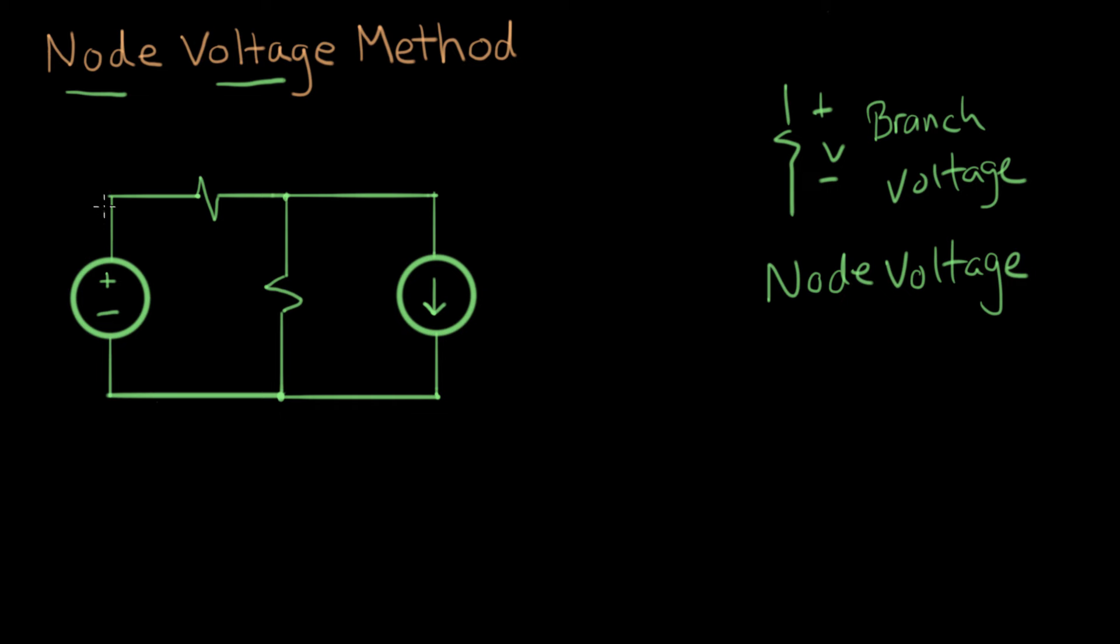We'll call this node here, where this junction between this resistor and this source, we'll call this node one. This is the junction between these two components here. There's another node that's these two resistors connected to this current source, and that's a single distributed node. So we'll call that node two. And down here, these three components are connected together in a junction, and that's node three.